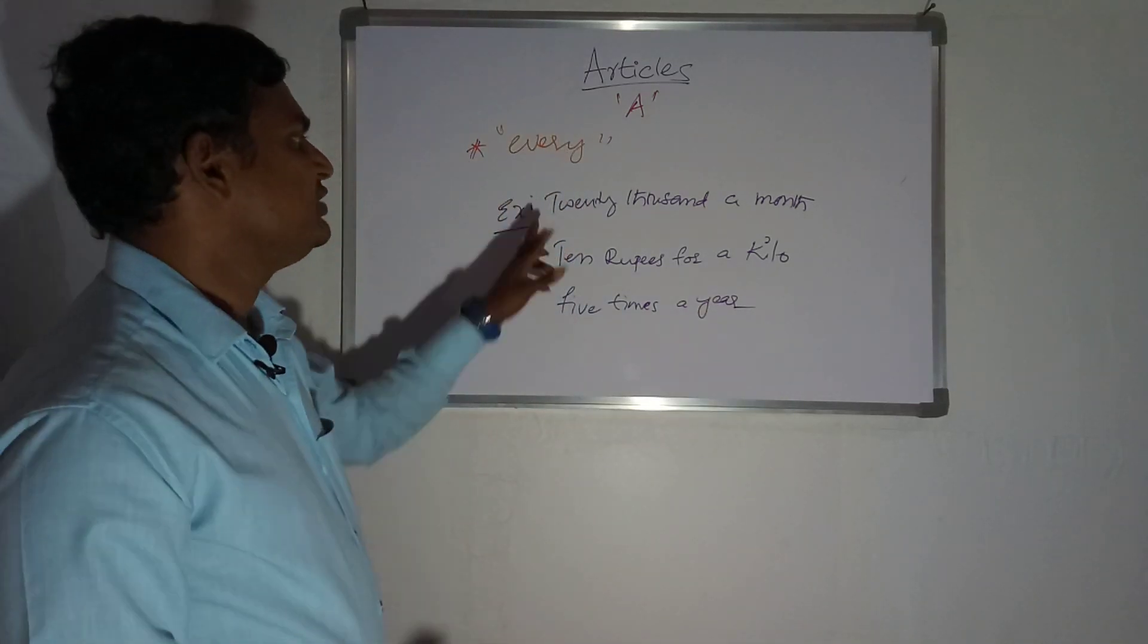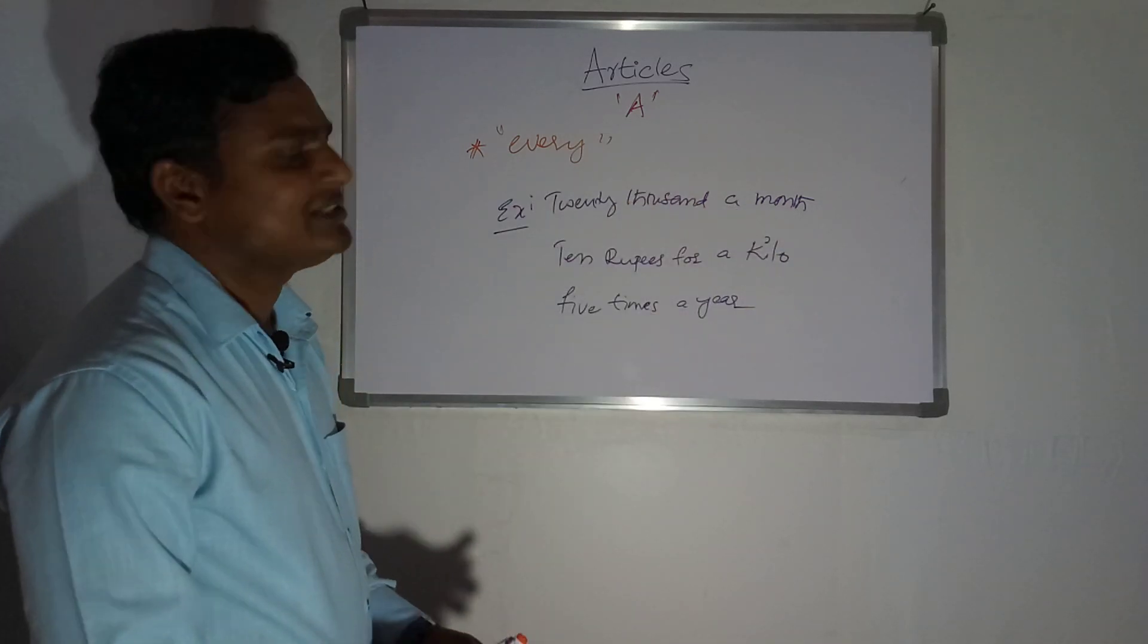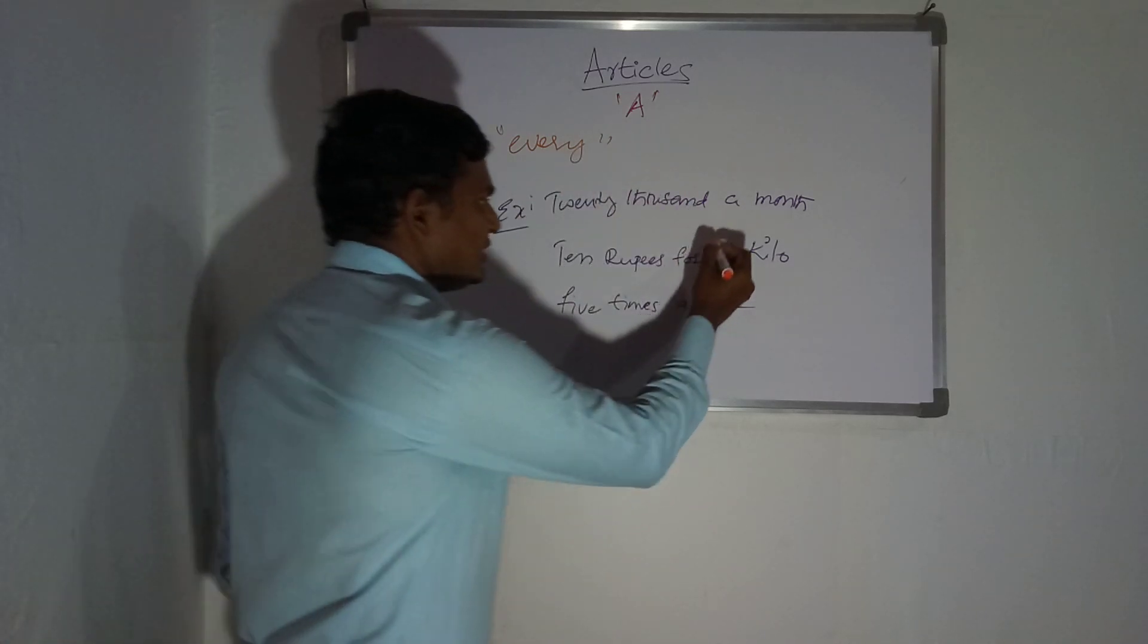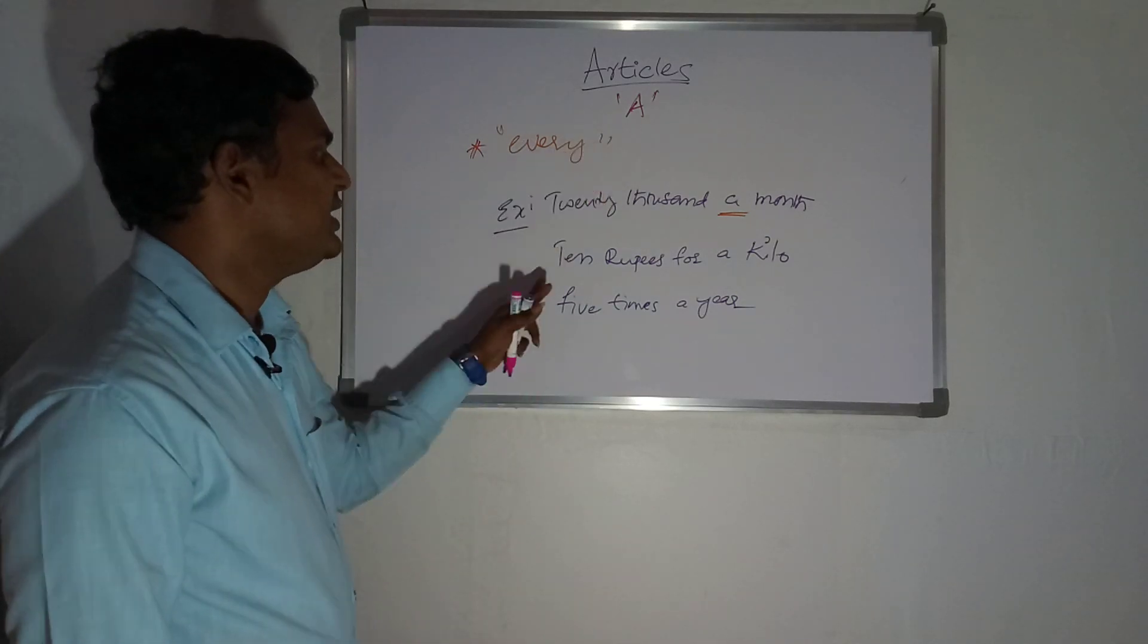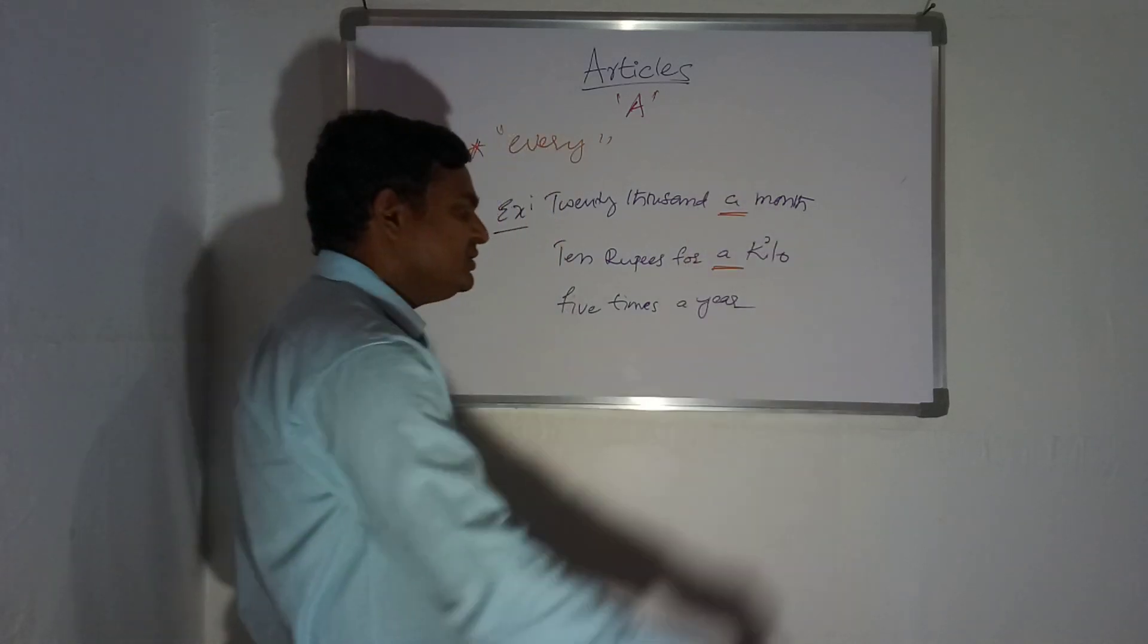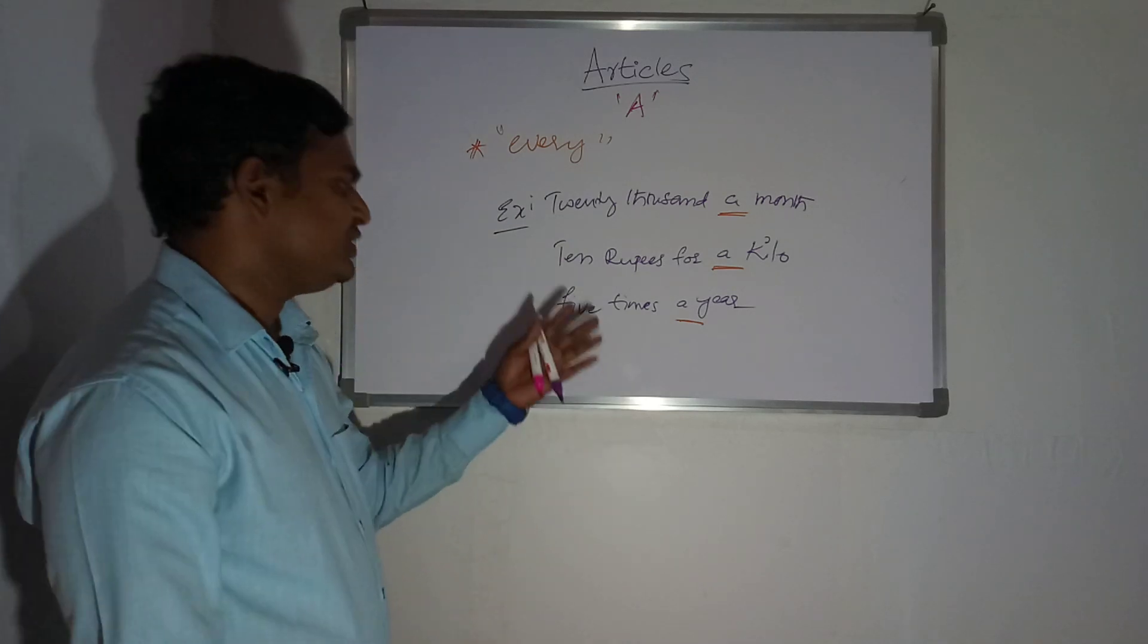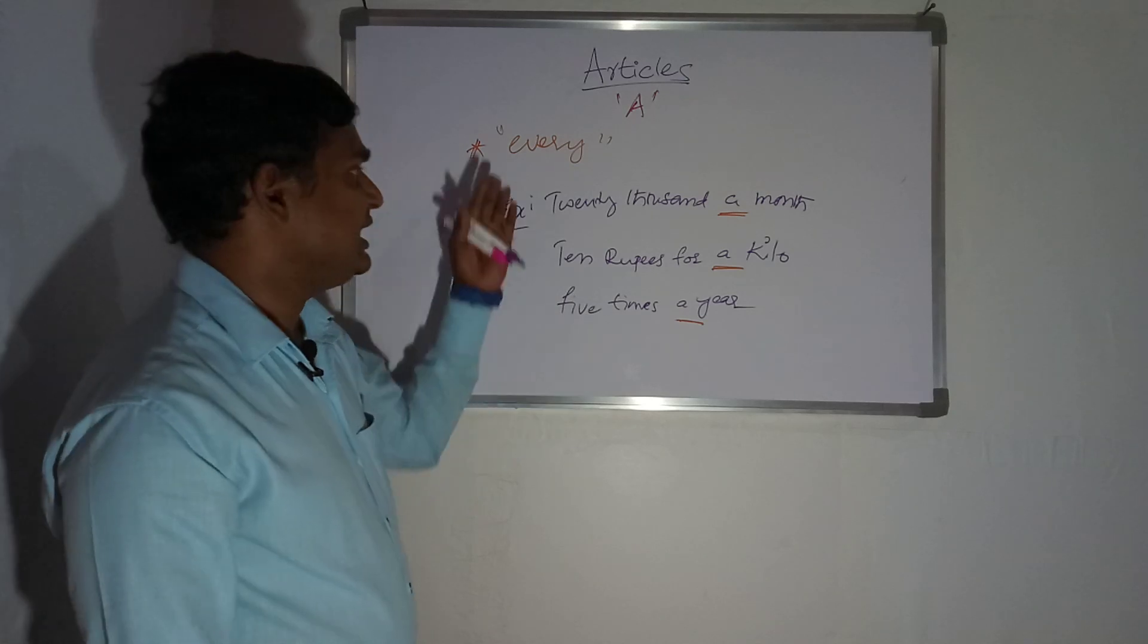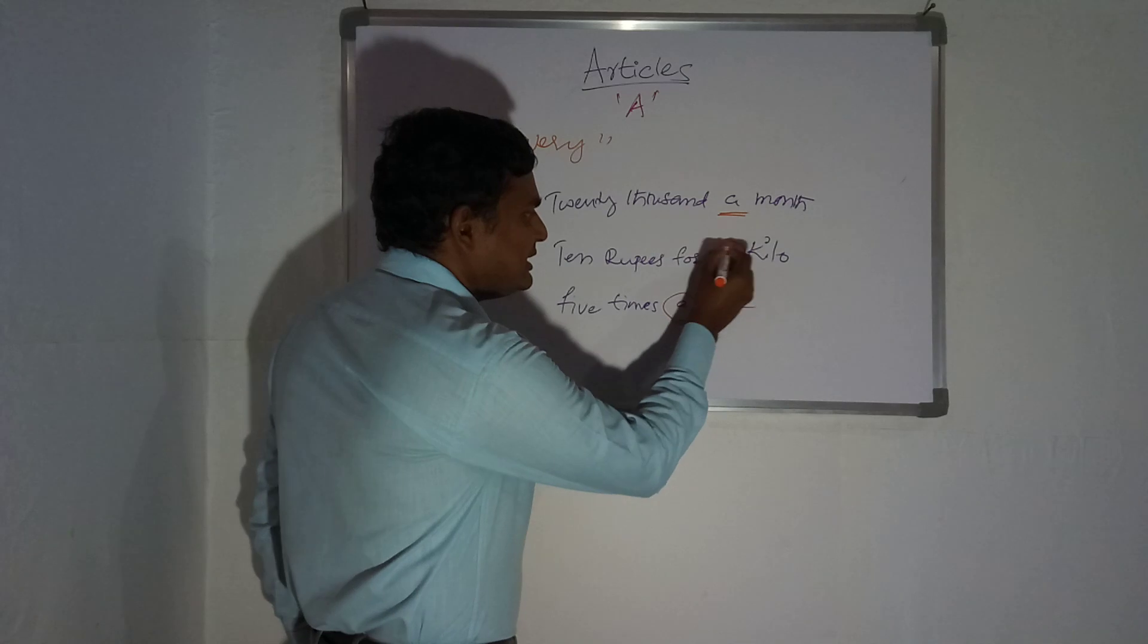Twenty a month, month. Twenty thousand month, month, month, month. So indefinite articles: twenty rupees per, five, ten. So indefinite articles, yeah.